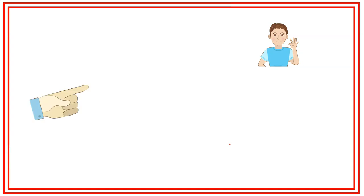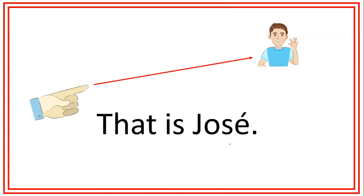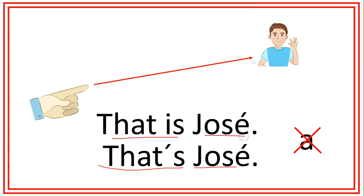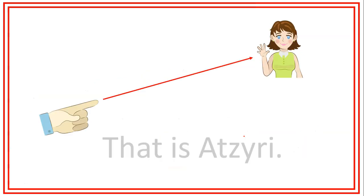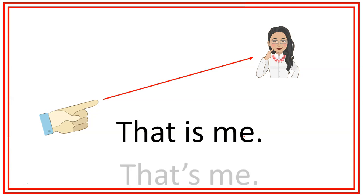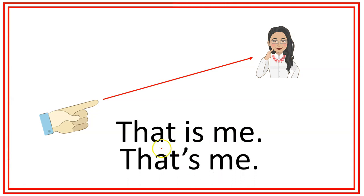That can also be used to identify people. For example, that is José, or the contraction that's José. Remember, when we are talking about people, we don't use the word a or an. We only use that's José or that is José. Some other examples: that is a city, that's a city, that's me or that is me.